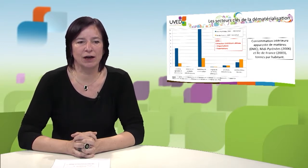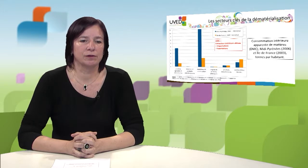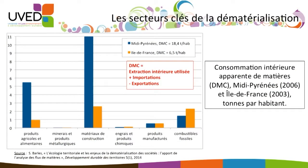The major categories on this graph are mostly represented by farm products, construction materials, and fossil fuels. Despite the differences between the two regions studied, we see that in the south of France — Midi-Pyrénées — flows are more important than in Île-de-France for construction or farming products, because Midi-Pyrénées is an area where farm production is higher, although Île-de-France is also an agricultural area.